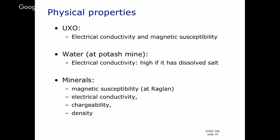Let's go back to the unexploded ordnance. They were bombs — made out of steel, could be iron. The physical properties associated with that are electrical conductivity and magnetic susceptibility. Iron can become magnetized — that's magnetic susceptibility — and it's a metal so it can conduct electricity pretty easily.